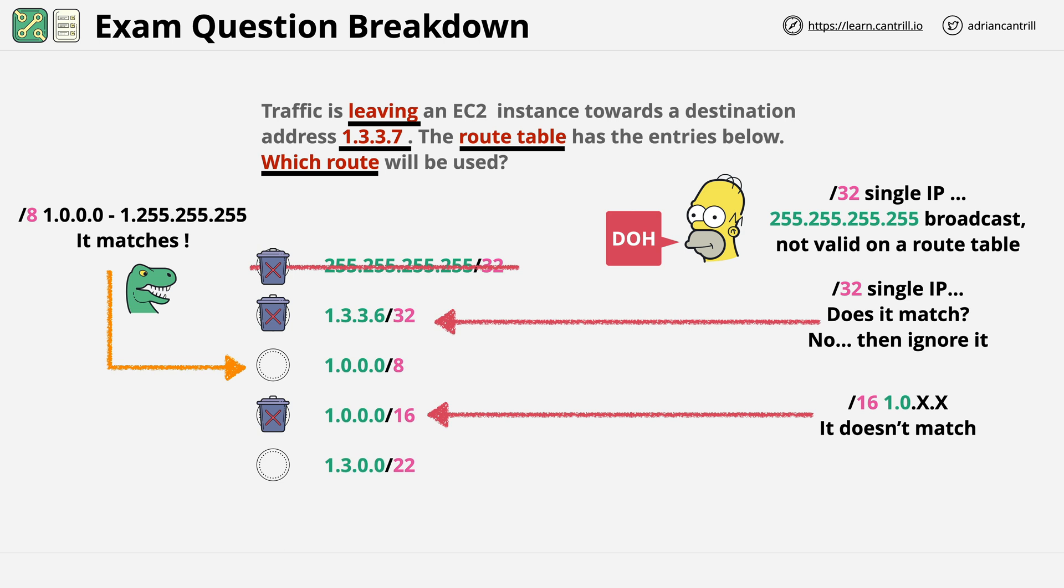This means that 1.3.0.0/22 matches from 1.3.0.0 through to 1.3.3.255. So this is a possible correct answer. And in this case, it's more specific than the third answer, the /8. And so it's picked to use within a route table. This also eliminates the third answer because while the third answer does work, it's not selected because the fifth answer is more specific. And that's it.